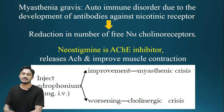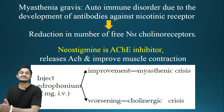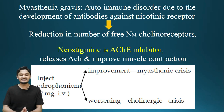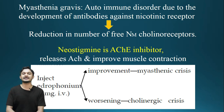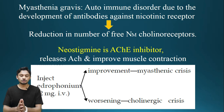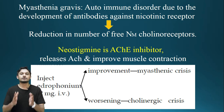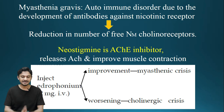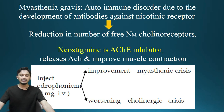The drug used for the treatment of Myasthenia Gravis is Neostigmine. Neostigmine is an acetylcholinesterase inhibitor, or cholinesterase inhibitor. It inhibits the enzyme cholinesterase, which increases acetylcholine and improves muscle contraction. That is the mechanism behind it.